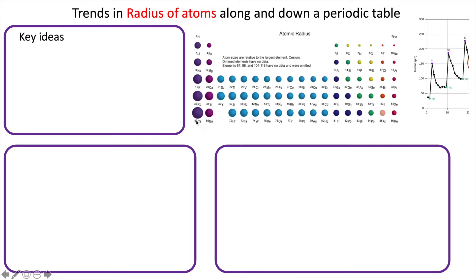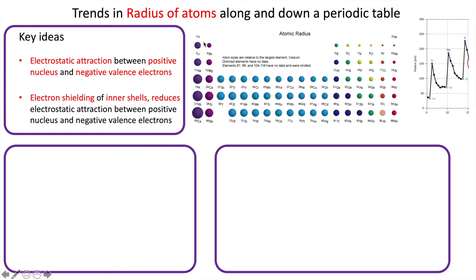First of all, you need to think about two key ideas which go through all of the patterns in the periodic table. That is, there's electrostatic attraction between the positive nucleus and the negative valence electrons, those are the outer electrons. And secondly, remember that the electrons on the inner shells shield the outer electrons, so there's not so much attraction to the positive nucleus.